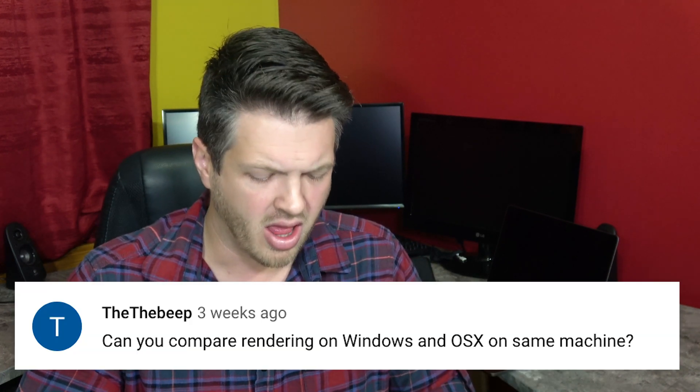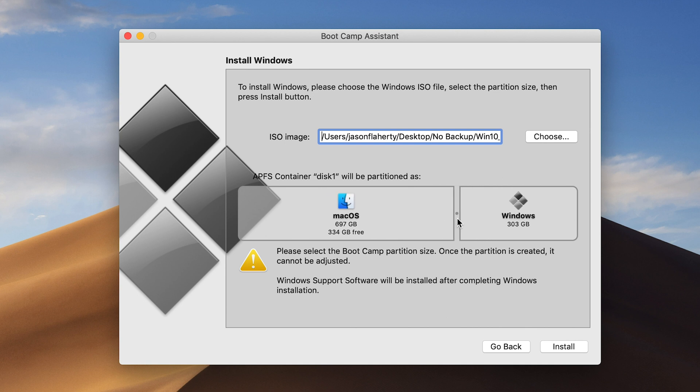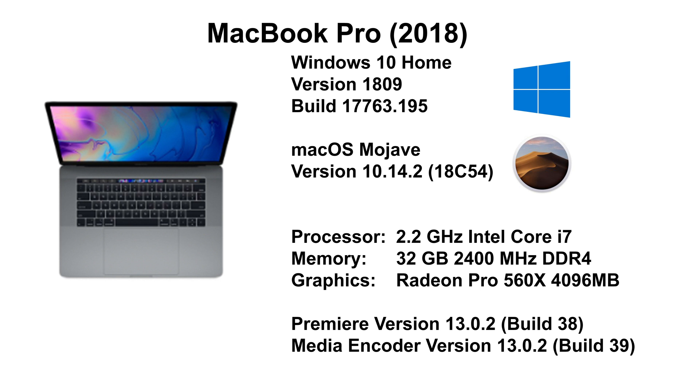This next question comes from TheTheBeep: can you compare rendering on Windows and macOS on the same machine? I assume they're talking about Boot Camp, where you can install Windows natively — not in a virtual machine — so it has full access to the hardware. They're probably wondering if it's worth buying Windows and installing it on an Apple product to do Adobe editing. That's a really good question. For this test, I used the Mac Mini 2018 and the MacBook Pro 2018, both with six cores. I ran the test using my 1-minute 4K test file and the 30-second 8K test file. Because Windows does not support Metal, we're only comparing OpenCL and software encoding.